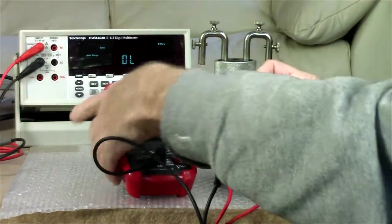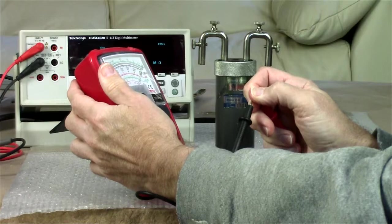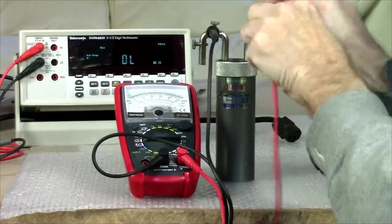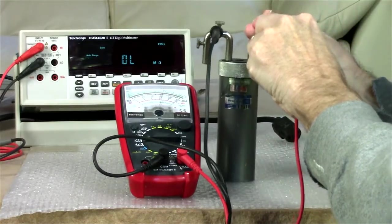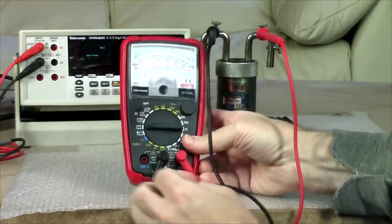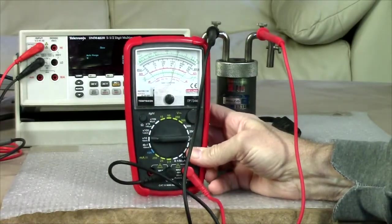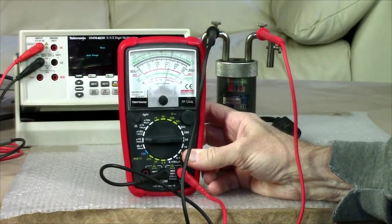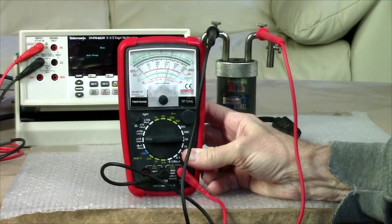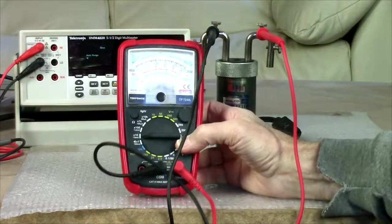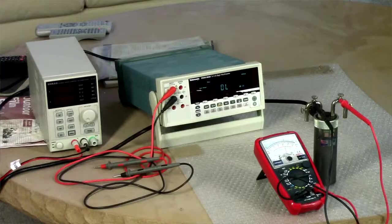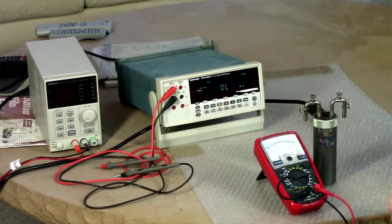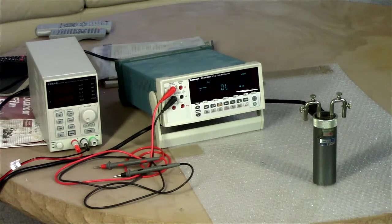You'd take your analog VOM, zero it out there, and you measure your resistance. Yeah, looks to be about a hundred ohms, maybe a bit more. But suppose we want it to like four digits of precision. How would we do that?